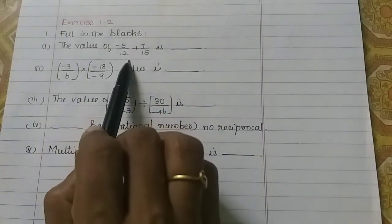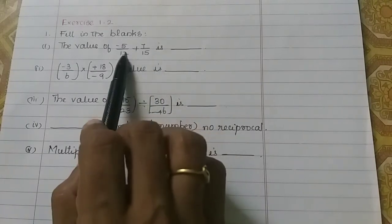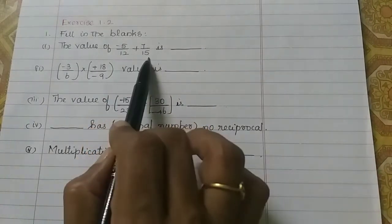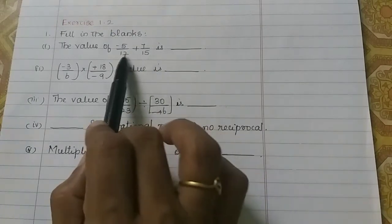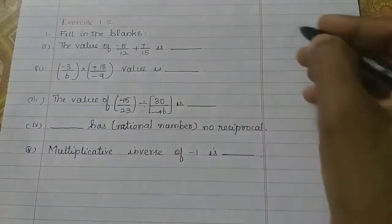The value of minus 5 by 12 plus 7 by 15 is... So, we have two plus. Then, we will add the two rational numbers. If we add the denominator, it will be equal to the denominator. If we add the denominators equal, we will find LCM.